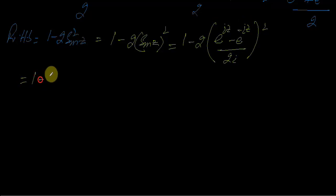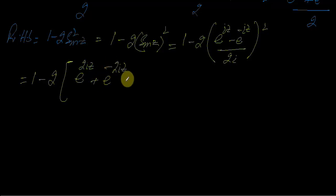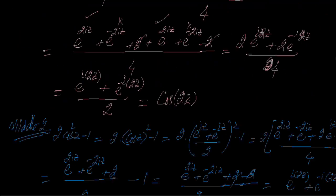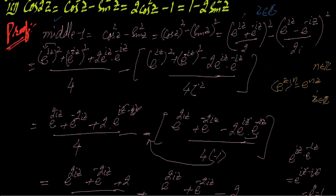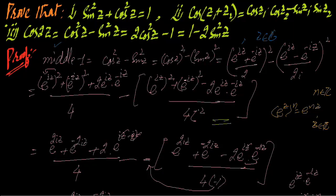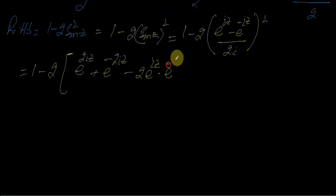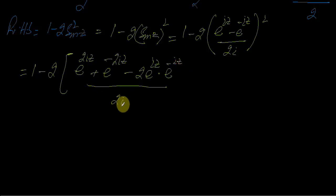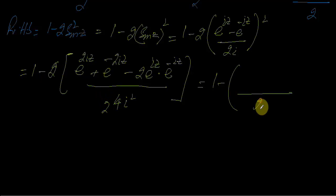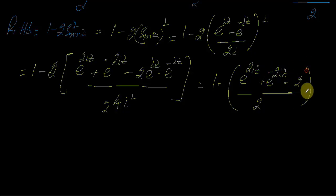This will simplify: 1 minus 2 times e^(2·iota·z) plus a² + b² plus minus 2·e^(iota·z)·e^(-iota·z) — this simplification you have already done this, so this is why I will do it quickly. Here you can write e^(-iota·z) divided by 2·iota, so 2 squared is 4 and iota squared gives minus 1. So 1 minus — the 2 cancels, divide by 2 — so e^(2·iota·z) + e^(-2·iota·z), and minus 2 is gone.